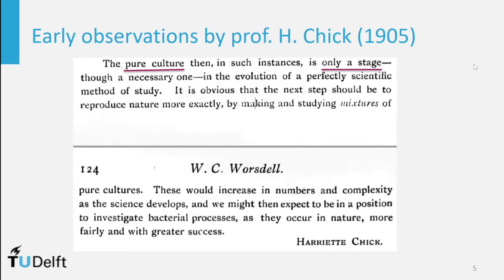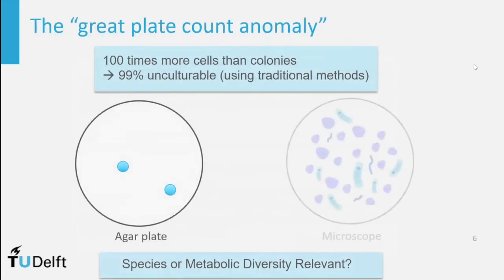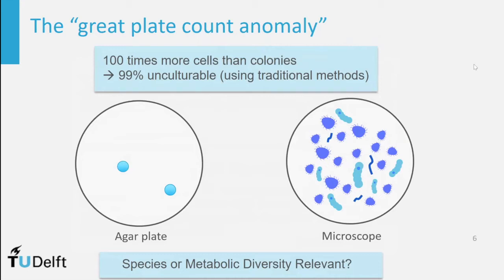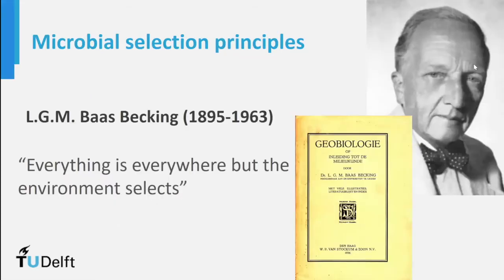That focus on pure culture changed around 2000 when DNA techniques evolved and clearly showed there is a big plate count anomaly — generally there are far more cells present in soil, wastewater, and elsewhere than what you find on a typical plate. When you look under the microscope with FISH or examine DNA sequences, there is much more diversity. This led to the idea that we might not understand 99% of all microbiology because we can culture only 1%. However, it's metabolic diversity that is relevant, and much of that we can already cultivate, although almost every year a new type of metabolism or organism with very different physiology is still being discovered.